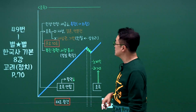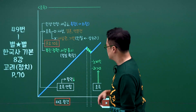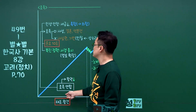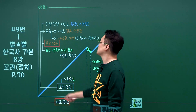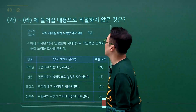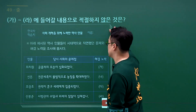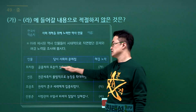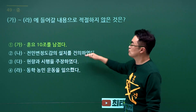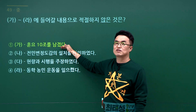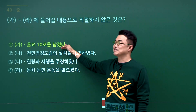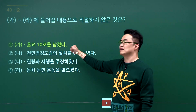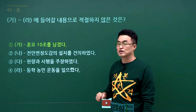태조 왕건의 훈요십조 문제입니다. 훈요십조에 들어갈 내용으로 적절하지 않은 것을 고르는 문제인데 최치원이 시무책을 건의했다는 것은 맞지만 훈요십조는 왕건이 남긴 것이므로 최치원은 관련이 없습니다. 정답은 1번으로 옳지 않은 것이 1번입니다.